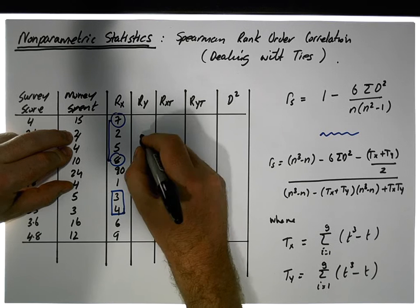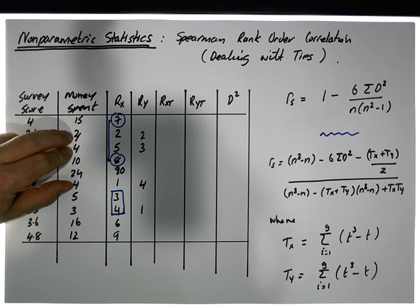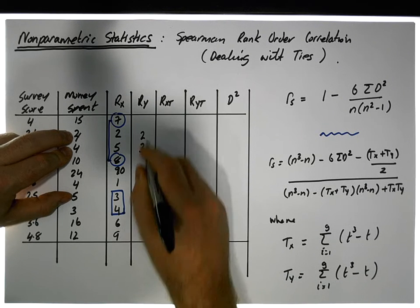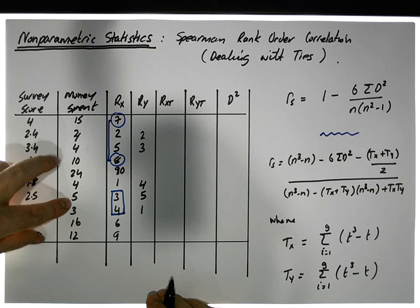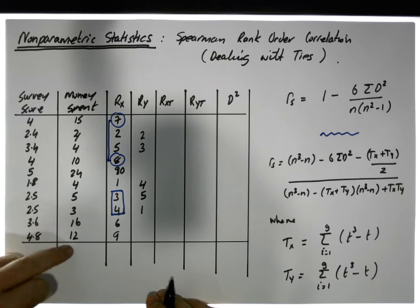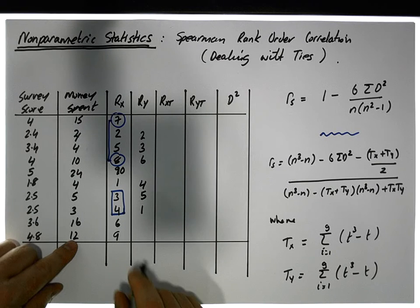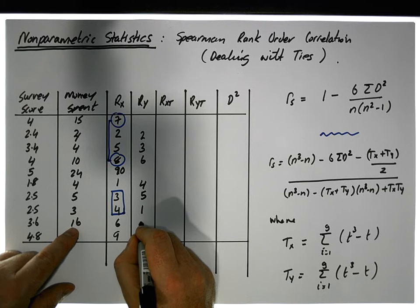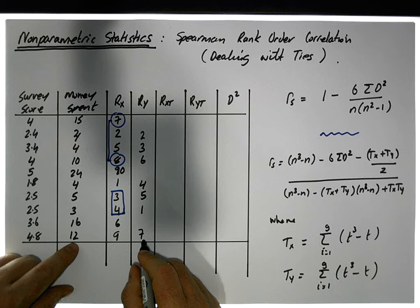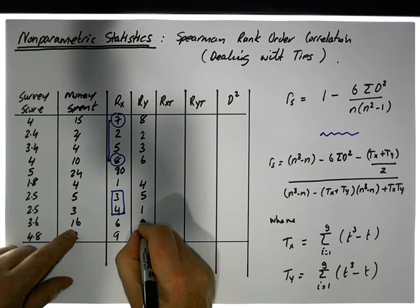After the three 4s, the next smallest value is 5, which gets rank 5. After 5 comes 10, which gets rank 6. Then 12 gets rank 7. After 12, we have 15, which gets rank 8, then 16 gets rank 9, and 24 gets the next rank after that.